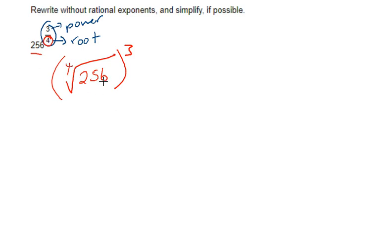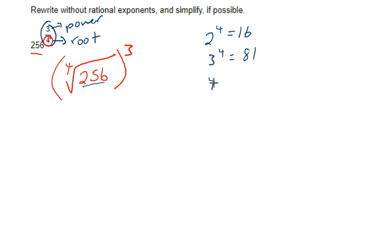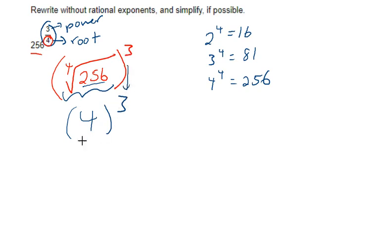So we'll do the fourth root of 256 first. What number, when raised to the fourth power, gives me 256? 2 to the fourth is 16, 3 to the fourth is 81, 4 to the fourth is 256 — so the answer is 4. Then we raise that to the third power: 4 to the third power is 64. That's one I expect you to know off the top of your head.